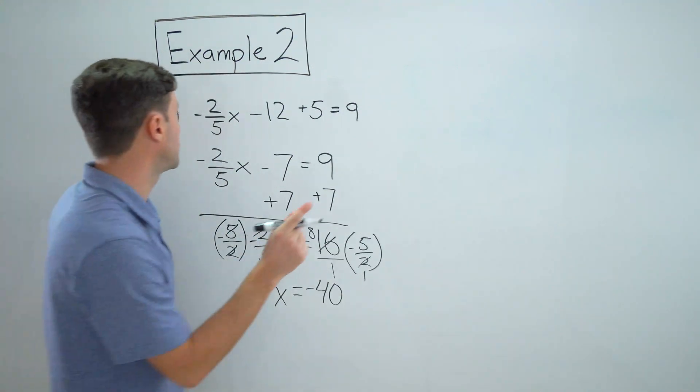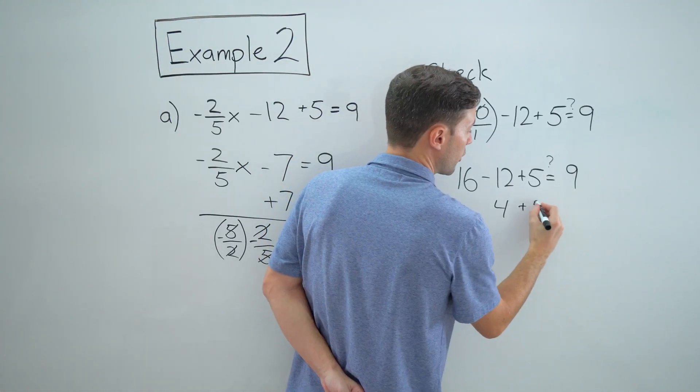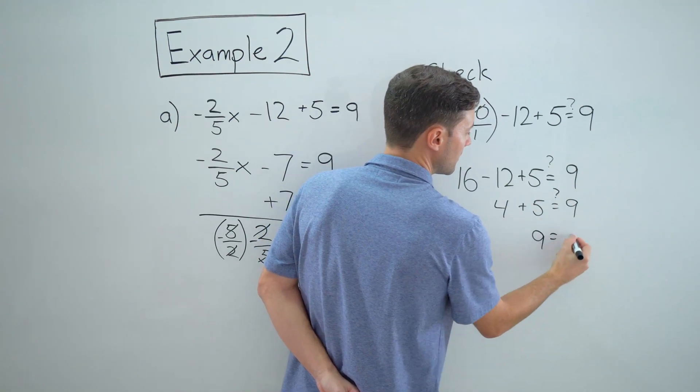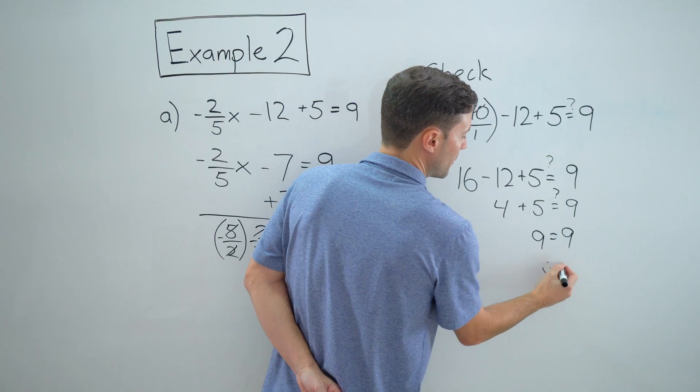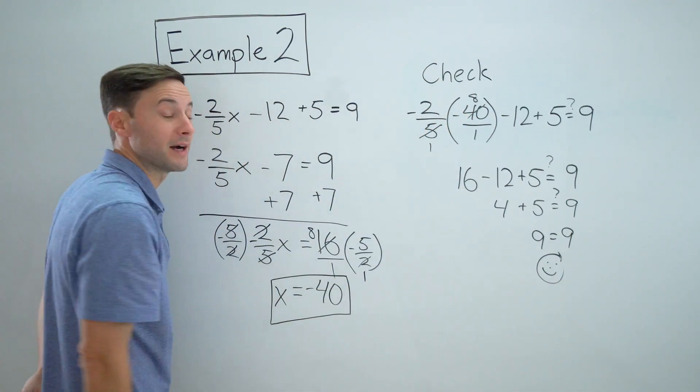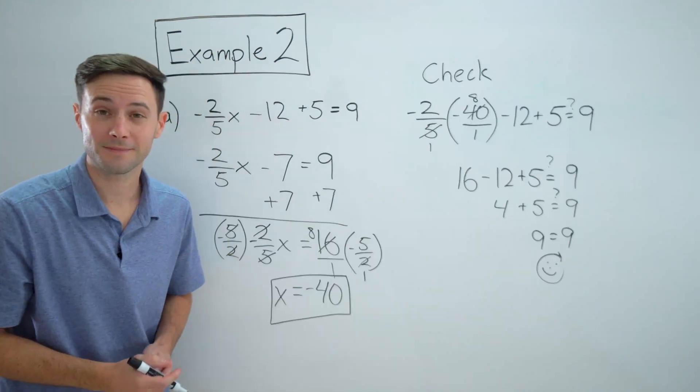Before I box it, let's check real quick. And is four plus five equal to nine? Yes, it is. So that checks out. We are happy. And I can box my solution. Let's try another one.